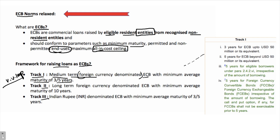Track 1 has been broken down further. The minimum maturity is 3 years for an ECB denominated in foreign currency where you are borrowing up to USD 50 million, and the minimum maturity is 5 years if you are borrowing more than USD 50 million. It is also 5 years for foreign currency convertible bonds — if you are borrowing through FCCBs or FCEBs, the minimum maturity is 5 years.